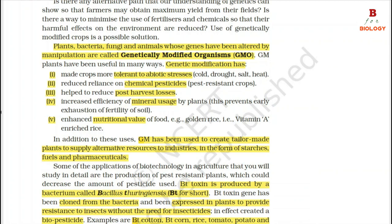Plants, bacteria, fungi and animals whose genes have been altered by manipulation are called genetically modified organisms (GMOs). GM plants have been useful in many ways. Genetic modification has: 1. Made crops more tolerant to abiotic stresses. 2. Reduced reliance on chemical pesticides. 3. Helped to reduce post-harvest losses. 4. Increased efficiency of mineral usage by plants, which prevents early exhaustion of fertility of soil. 5. Enhanced nutritional value of food.